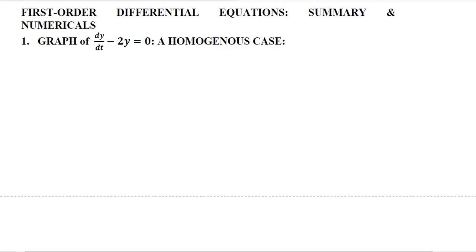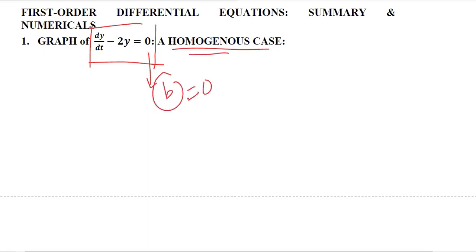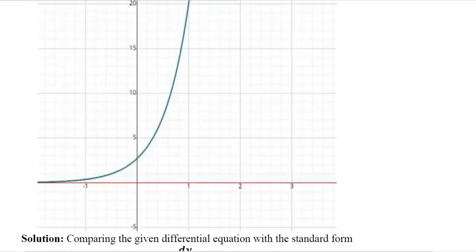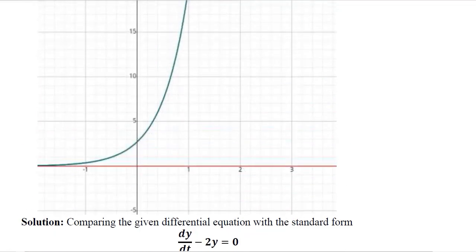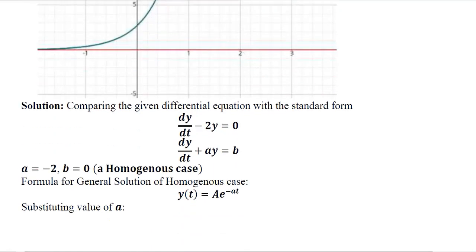Let's start with the first example, which is of the first case. Given a certain equation, we should first focus on the value of b. It is equal to 0, so it's a homogeneous case. Then we focus on the value of a, which is minus 2 in this case. So we are clear that it is a homogeneous case and we can try to visualize it in the diagram.